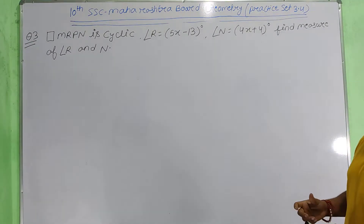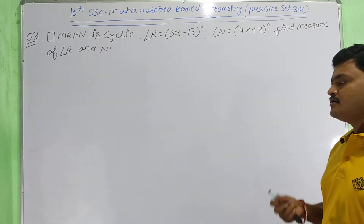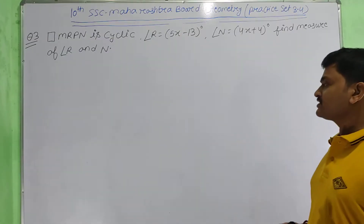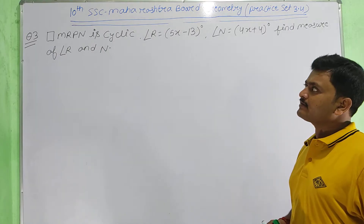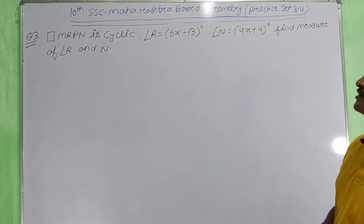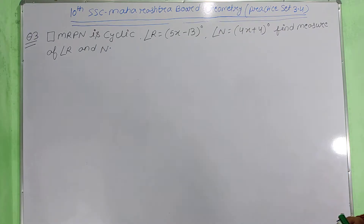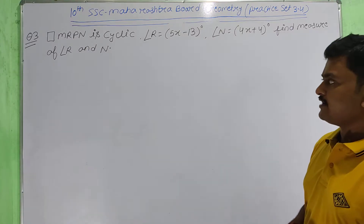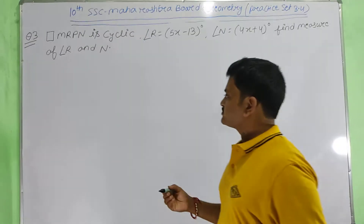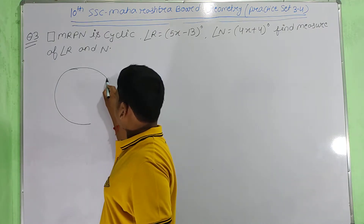10th SSE Maharashtra Board Geometry Practice Set 3.1, Question number 3. Quadrilateral MRPN is a cyclic quadrilateral where angle R equals 5x minus 13 degrees and angle N equals 4x plus 4 degrees. Find the measure of angle R and angle N.